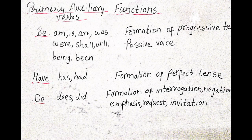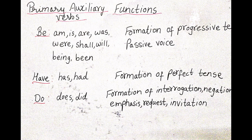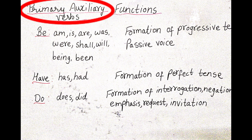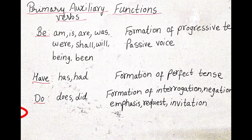Now let's see what are primary auxiliary verbs. They are BE, HAVE, DO.